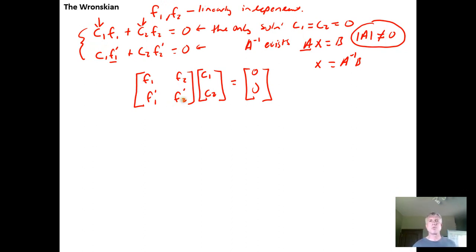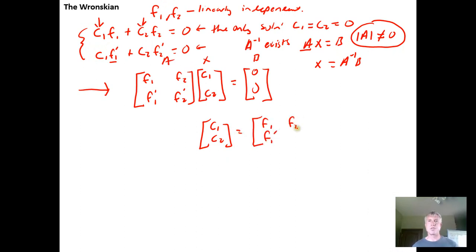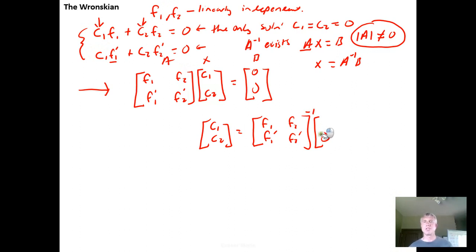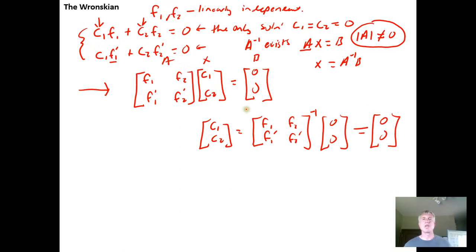Here we're in a case where the Ax = b form only has a unique solution if A inverse exists. Our unique solution would be [c₁, c₂]ᵀ equals the inverse of the matrix [f₁, f₂; f₁′, f₂′] times the zero vector [0, 0]ᵀ. Multiplying the inverse by the zero vector just gives the zero vector, so the unique solution will be [0, 0]ᵀ if the inverse of this matrix exists.